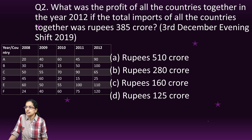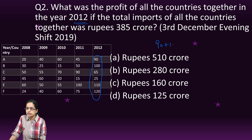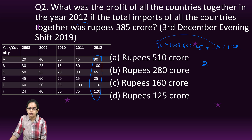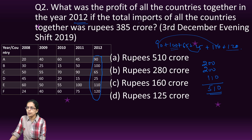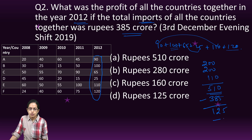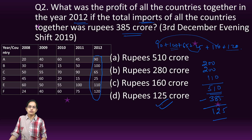The next question: what was the profit for all countries together in 2012? Add up all exports: 90 plus 100 plus 65 plus 25 plus 110 plus 120. Group them as 90+110=200, 65+20+120=205, and 100+10=110, giving total exports of 510. Total imports are given as 385. So profit = 510 minus 385 = 125. This question was asked in the December 2019 exam.